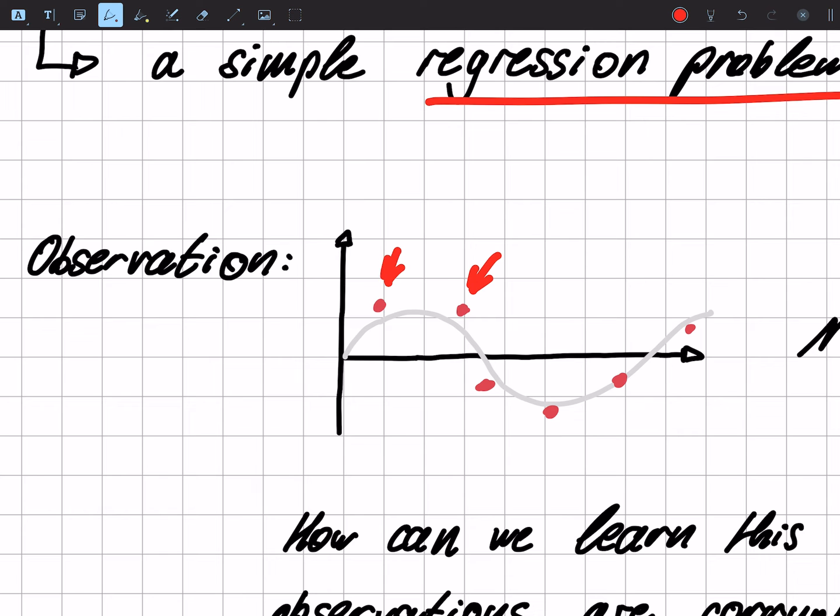So we see only our observations, the red points, and with this knowledge we want to predict something new. So if we have a different input, for example this x here, we would like to predict a possible output, in our case a t. So this is our goal.